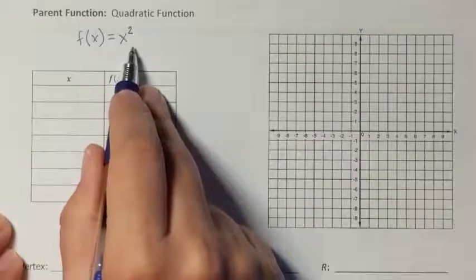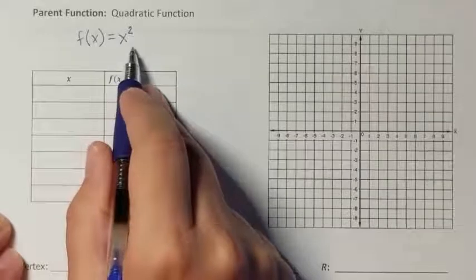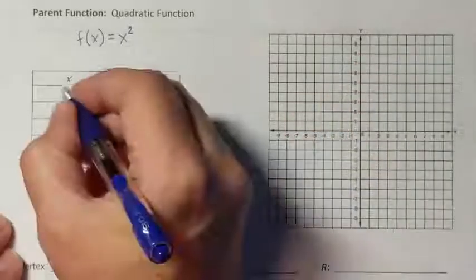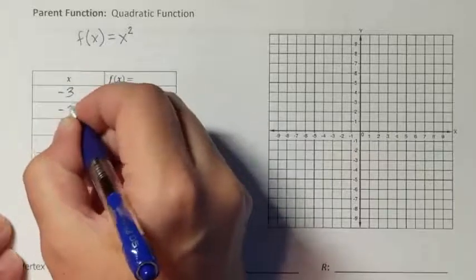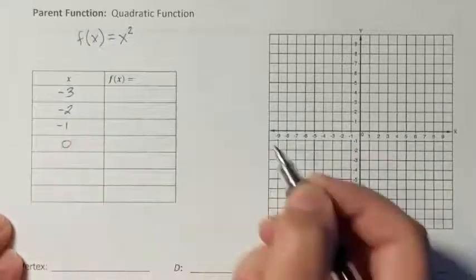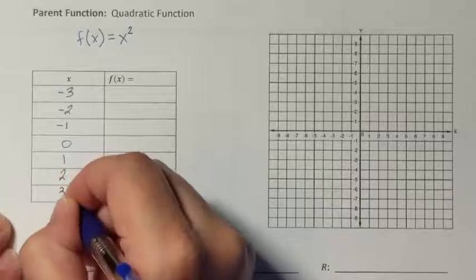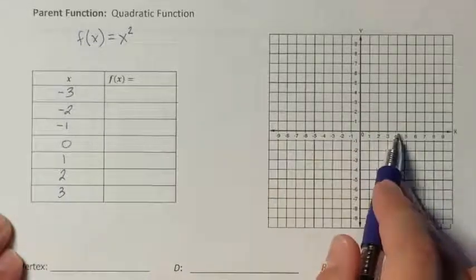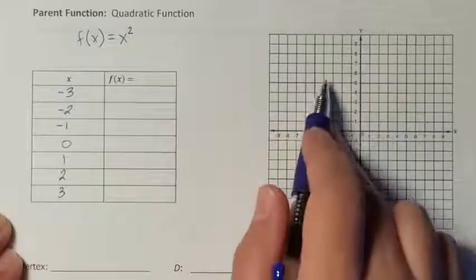This is the parent function that all quadratics will be built from. So if I needed to use a table to form a quadratic function, we're going to pick a couple of negative values, 0, and a couple of positive values. This will tell us where in between this area right here our quadratic will go.